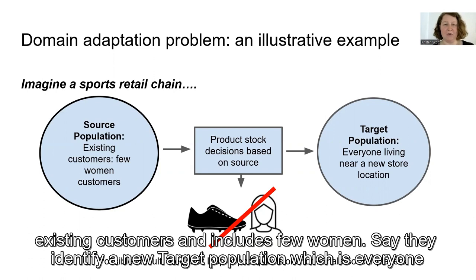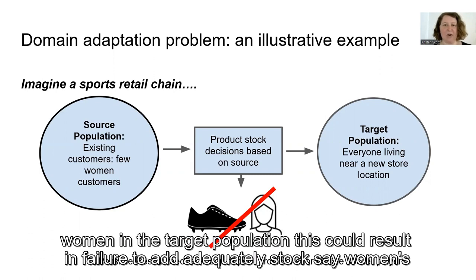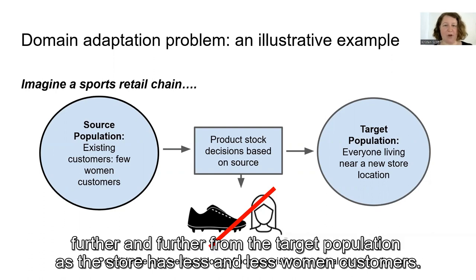Say they identify a new target population, which is everyone living near a new store location. The source population may not reflect the proportion of women in the target population. This could result in failure to adequately stock, say, women's soccer shoes. There could even be a feedback loop effect where the source population becomes further and further from the target population, as the store has less and less women customers.